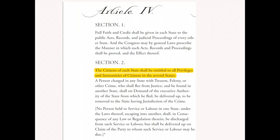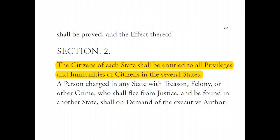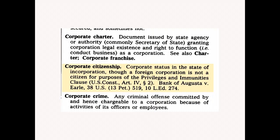Article 4, Section 2 created a different citizenship than what the 14th Amendment created in 1868. It made you a citizen of the state. Also see 'corporate citizenship': a corporation's status in the state of incorporation through a foreign corporation is not a citizen for the purposes of the privileges and immunities clause of Article 4, Section 2. Meaning a constitutional citizen — an Article 4, Section 2 citizen — is not a corporation. But a 14th Amendment citizen, as I already showed you, is.